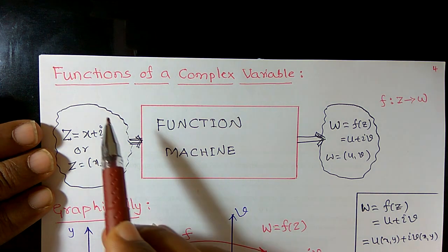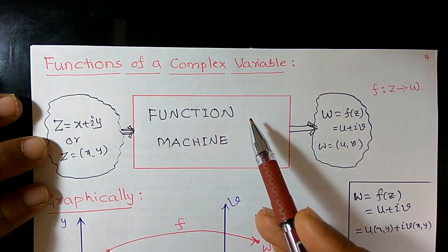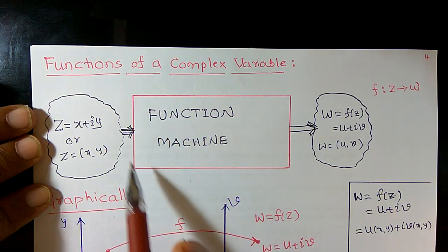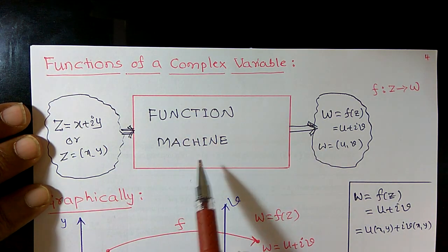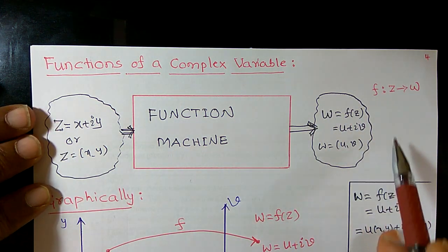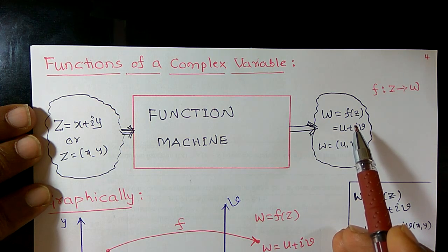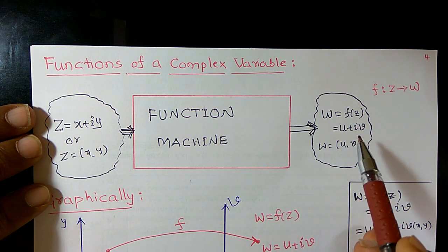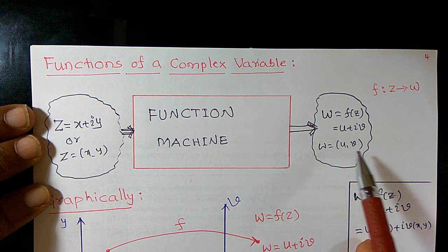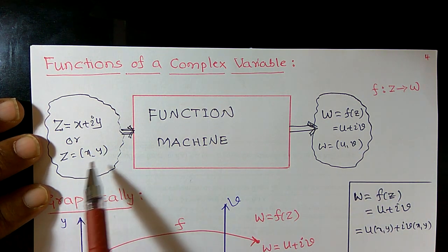Now I want to define a complex valued function or sometimes we can say functions of a complex variable. Here I can treat z as a variable. So this box, I want to call it as a function machine. If I input z to this function, what I want to obtain or what is the output of this machine? So I can obtain w = f(z) as an output, or w = u + iv as an output, or w = (u,v) ordered pair u,v. Or I can say that if you input z = x + iy or ordered pair (x,y).